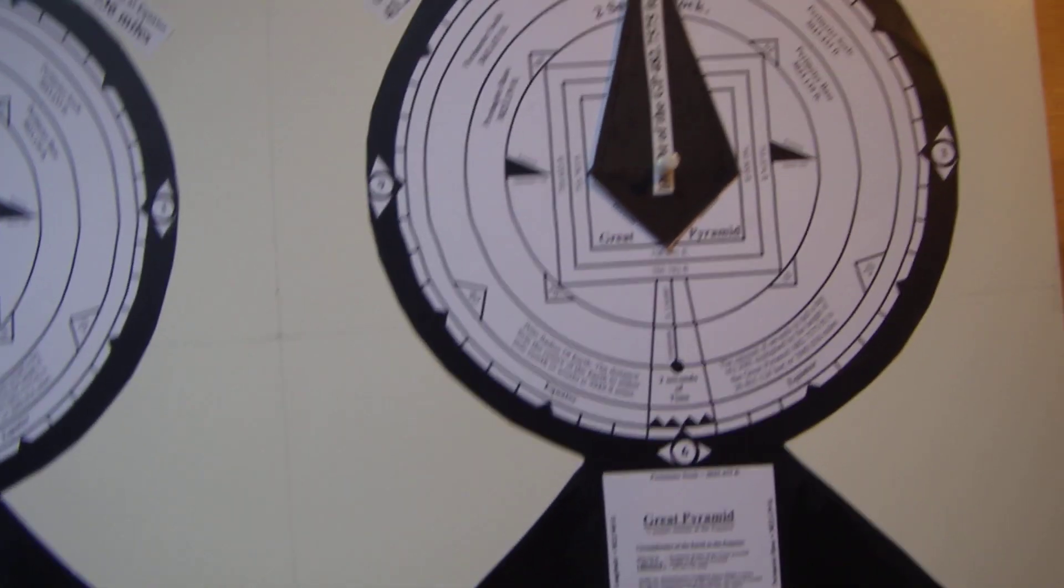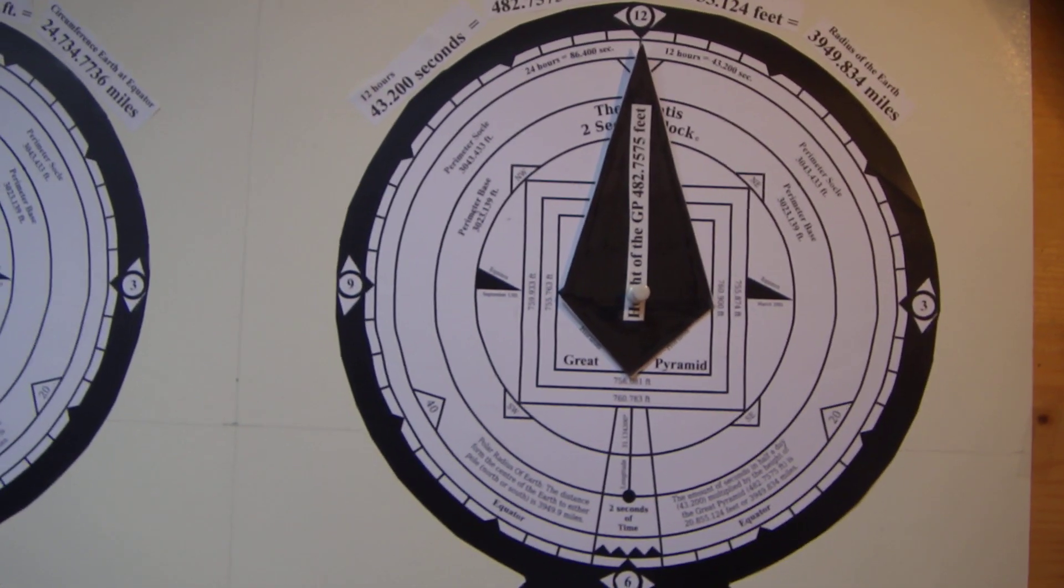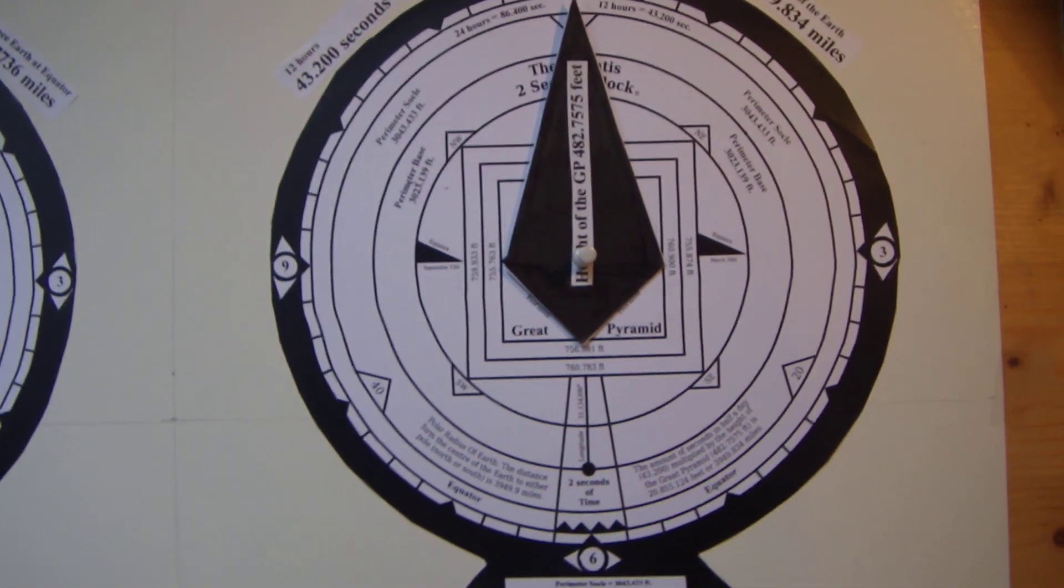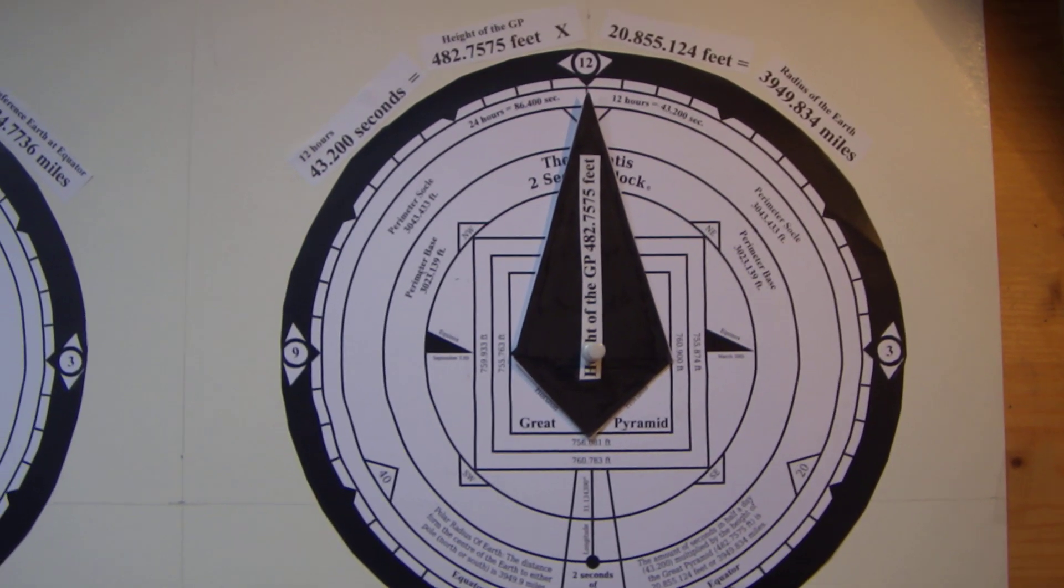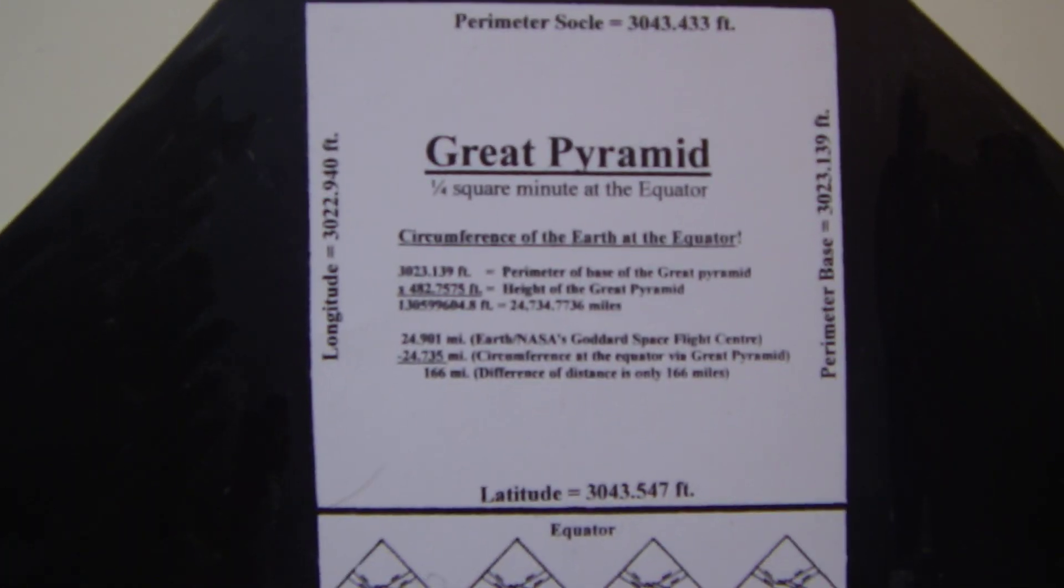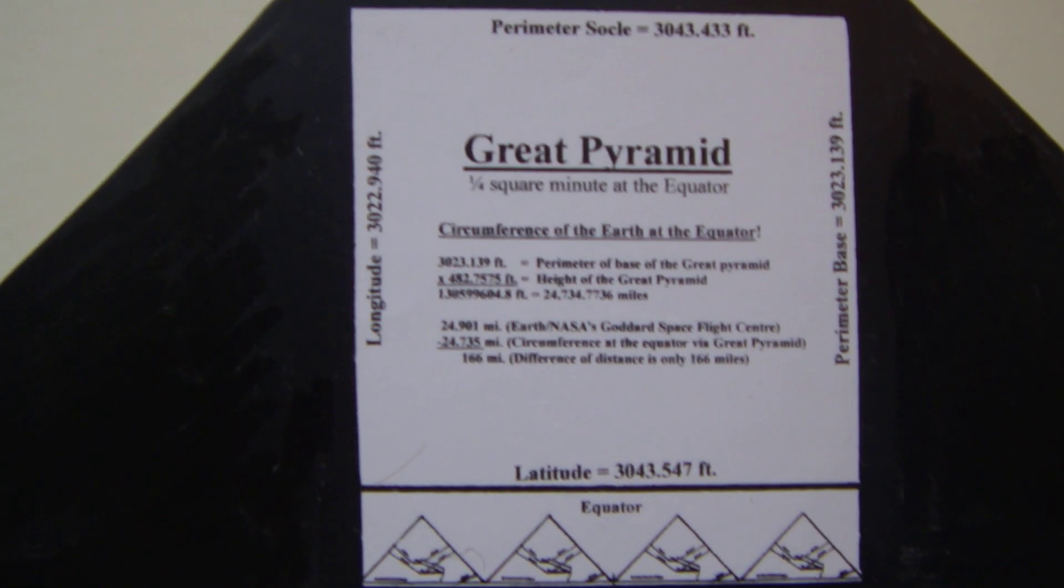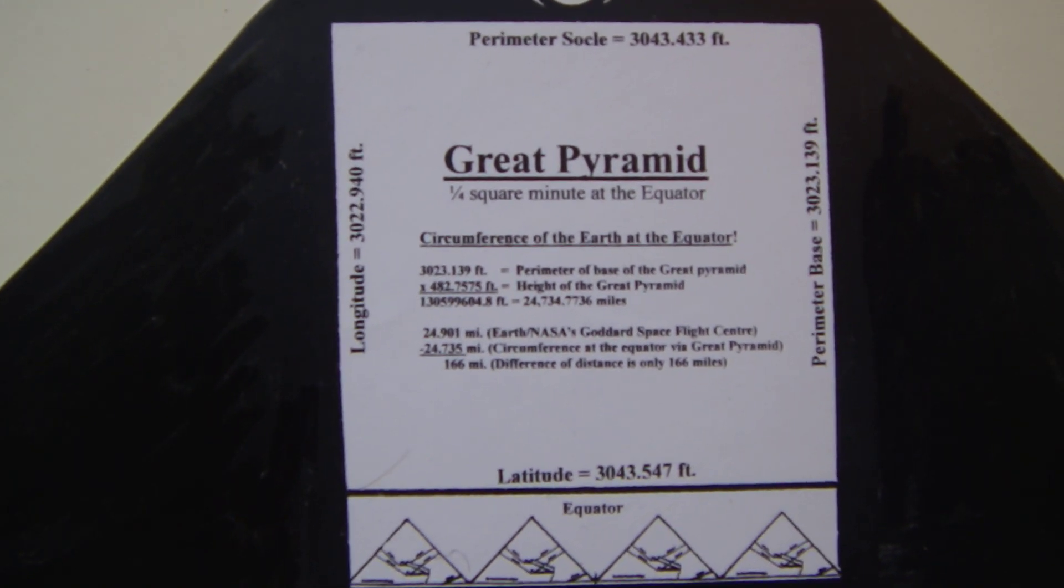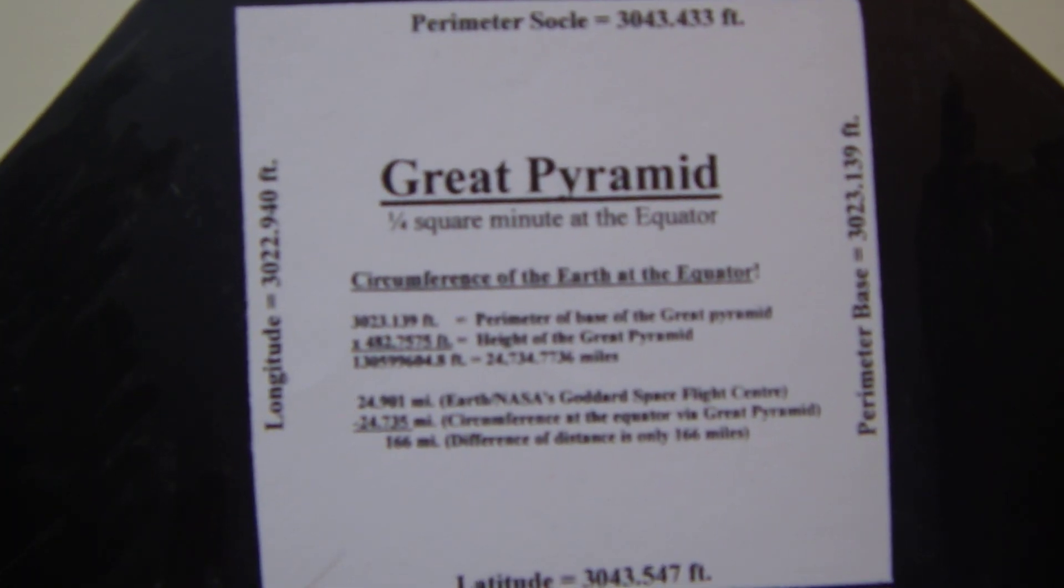I think that's pretty good for the ancient peoples to be able to figure those out and build a pyramid to give you those numbers. This one is the radius of the earth, how to determine it. You can read this over later, and under my video I have all this information provided as well, and you can put stop action on there if you wish.